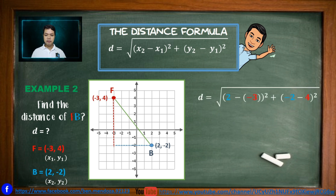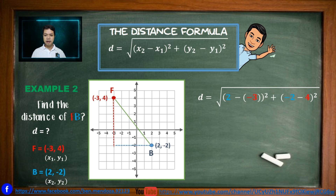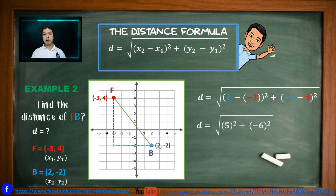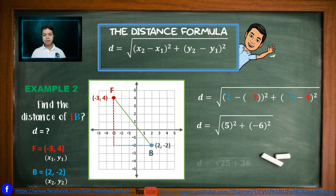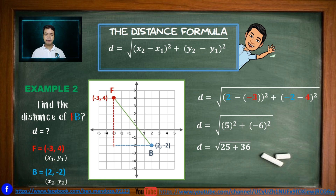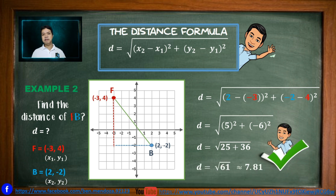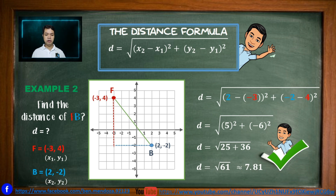Applying the distance formula, we have (x₂ minus x₁) and (y₂ minus y₁). So 2 minus negative 3 gives us positive 5, and negative 2 minus negative 4 gives us negative 6. Evaluating, 5 squared gives us 25, while 6 squared gives us 36. Getting the sum of 25 and 36, D equals the square root of 61, which is approximately 7.81 units — that is the distance between points F and B.